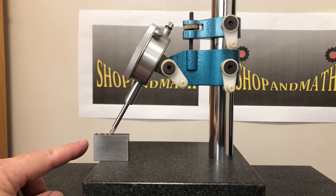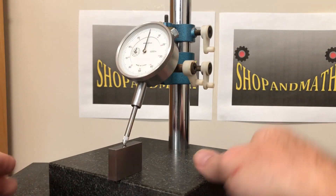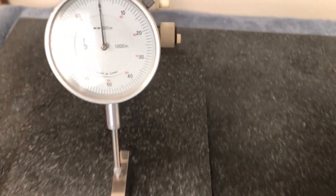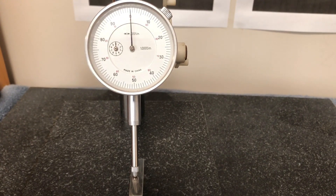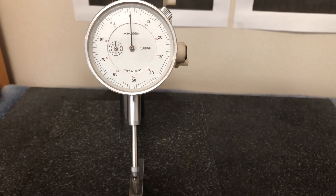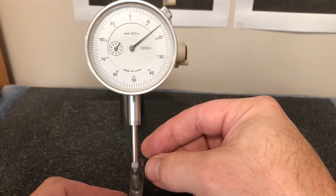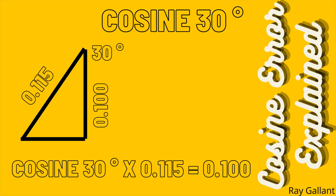I've placed a 1-inch gauge block here because I'm running off the edge of my granite plate. Let's turn that around. We're set to zero. So now I'm going to add a hundred thou gauge block to this stack.